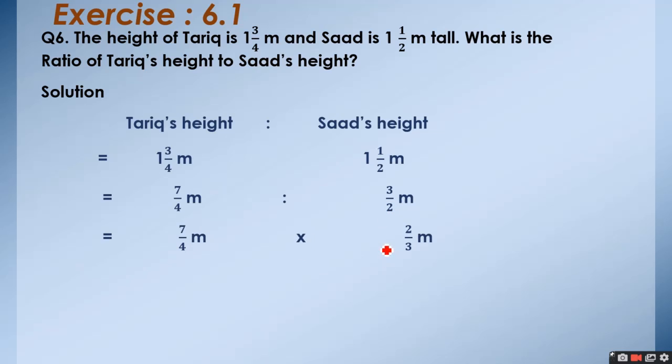After this, again we will do the same step which we have done in the previous question. We change the colon sign into the multiplication sign and reciprocal the second fraction. So, I have changed colon sign into the multiplication sign and I have reciprocal 3 upon 2 into 2 upon 3.